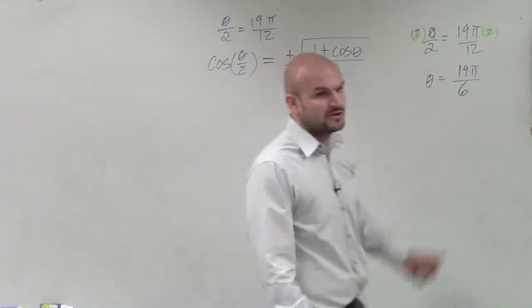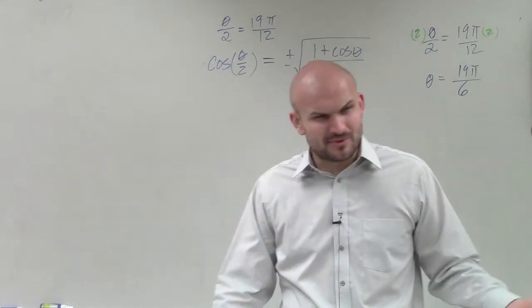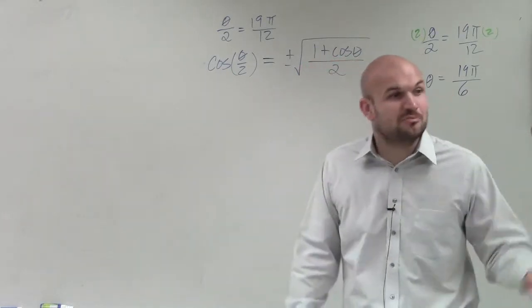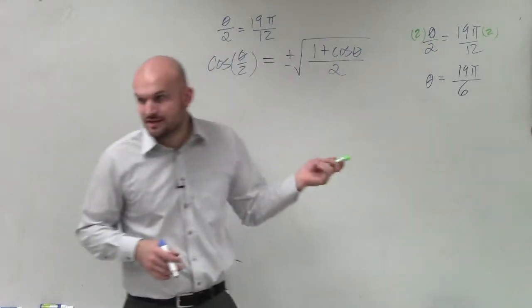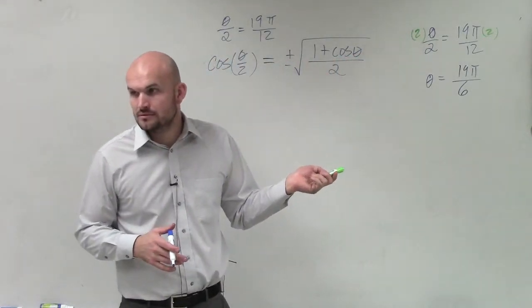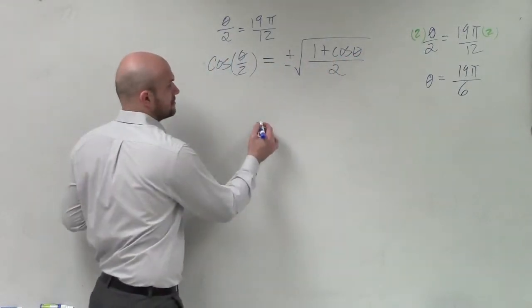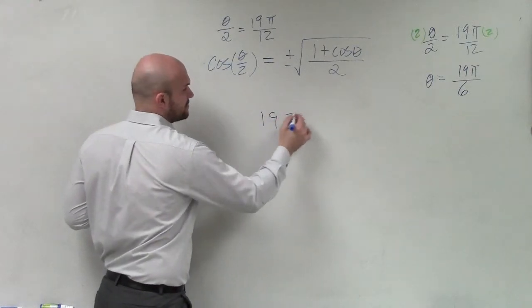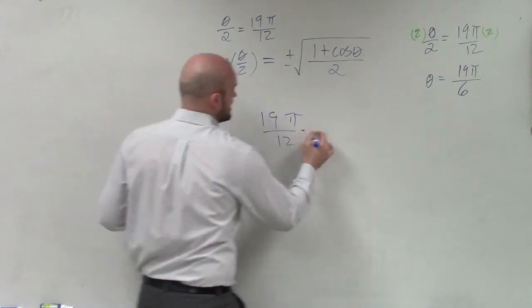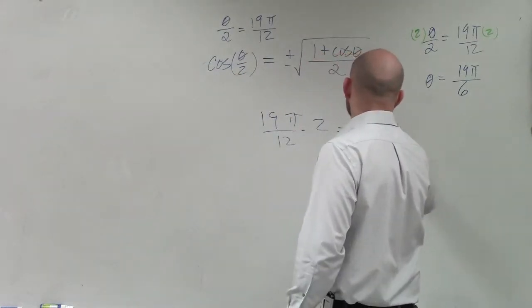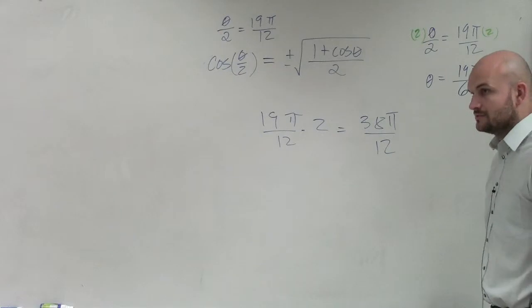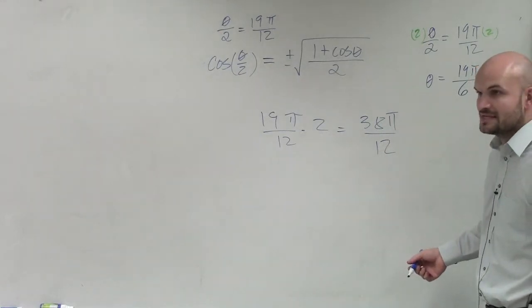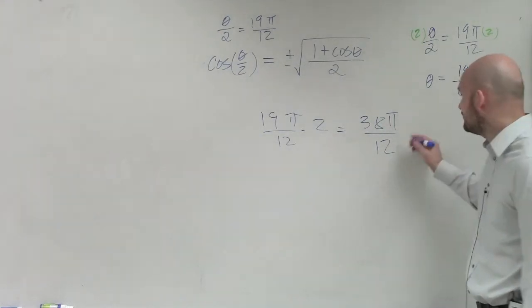So what I can do is find the coterminal angle. Well, how do we find the coterminal angle again? We add and subtract 2π, right? Multiply it. Times 2, that gives you 38π over 12. Can you divide those by 2, the top and bottom? What's the common factor? How do you simplify that? It's over 6. Yeah, over 6, and I'll verify that.